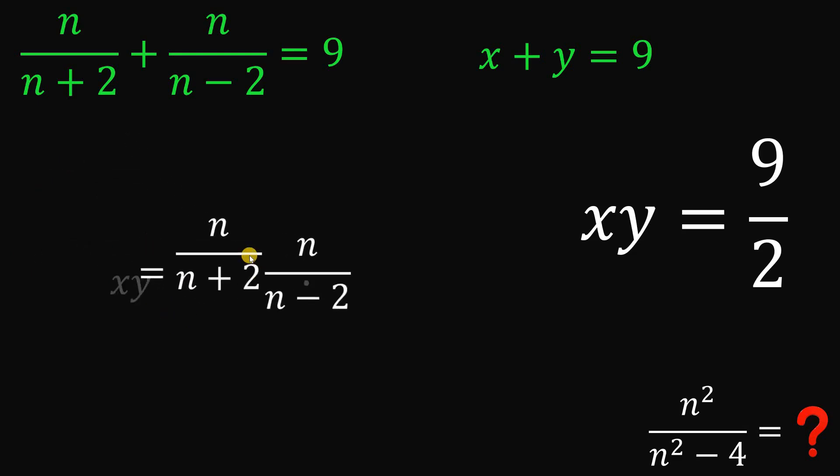So, if we get the product of these 2, we get n over n plus 2 times n over n minus 2. And if we multiply this, we get n squared, n times n, we have n squared. And on the denominator, we have n plus 2 times n minus 2. This will give us n squared minus 4.